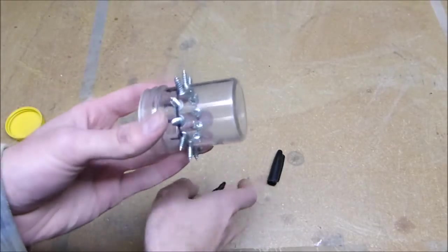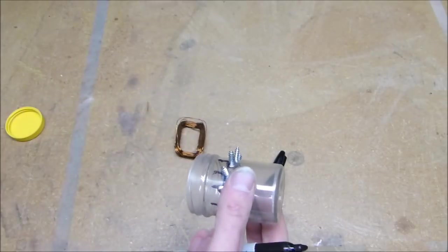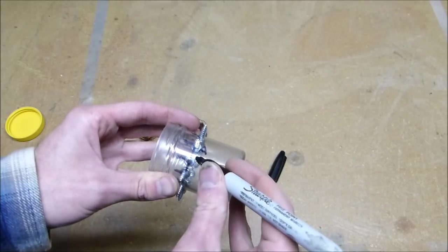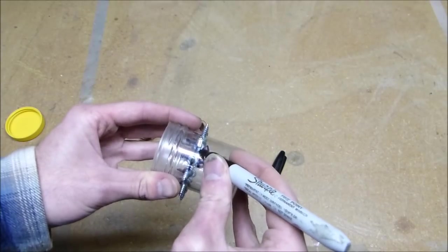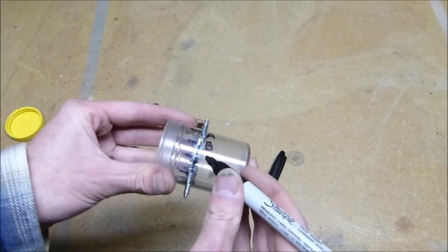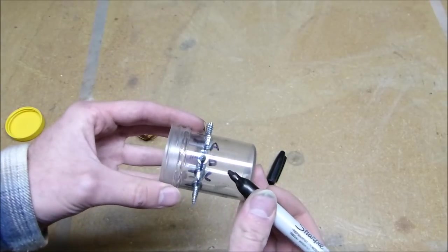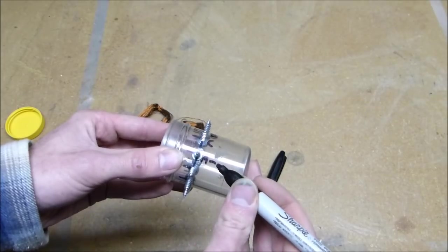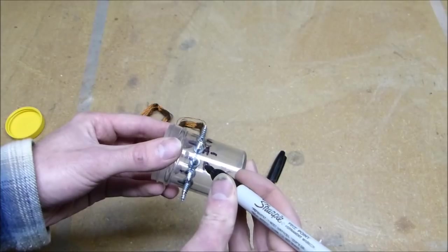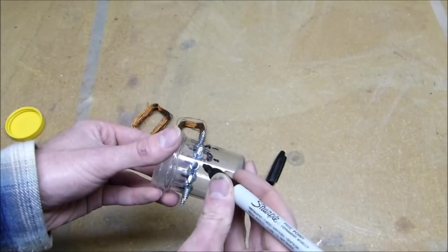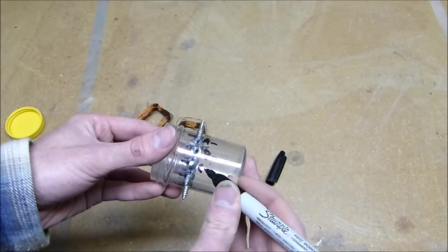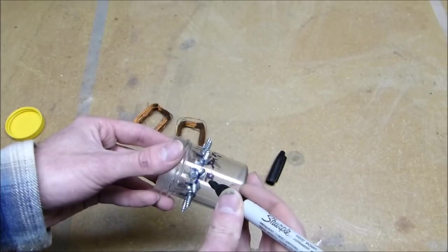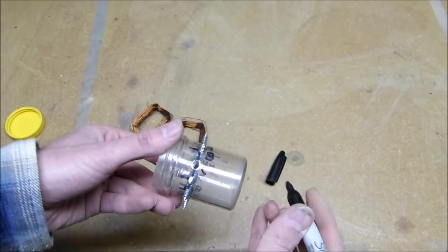So in order to prepare for winding the coils, pick one screw to start and go A, B, C. Then the next one after A, B, C is A negative, B negative, C negative. Then back to regular A, B, C. And do this to all of them.